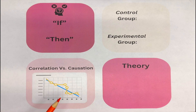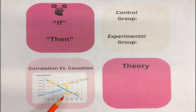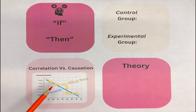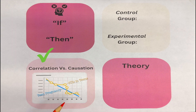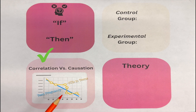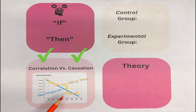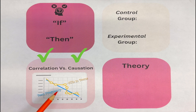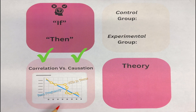However, if teen pregnancy is going up and STIs in teens are also going up, we have correlation — both moving in the same direction. And more than likely we also have causation, because the more teens engage in sexual activity, it increases the risk for both STIs and teen pregnancy at the same time. So we have both correlation and causation for that example.